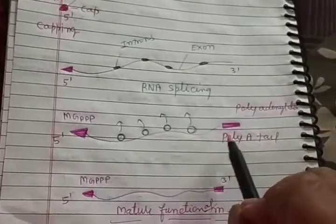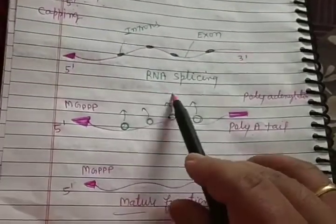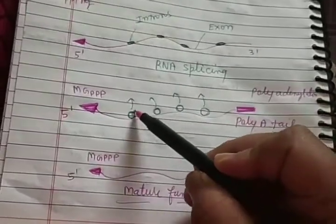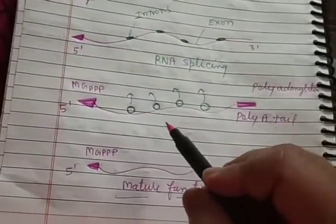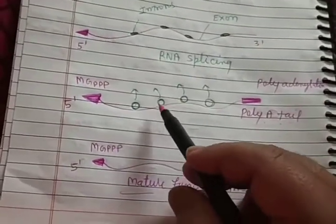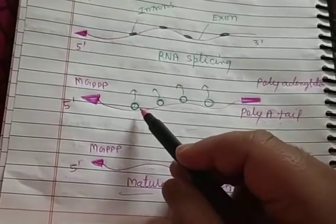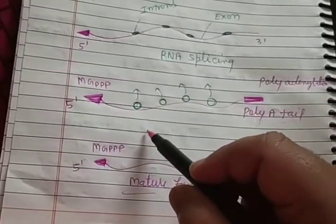After capping and tailing, hnRNA becomes stable. Then RNA splicing takes place. In RNA splicing, non-functional genes called introns are removed by the help of a protein complex called the spliceosome. The spliceosome is a special type of protein complex that provides help to remove introns from hnRNA.